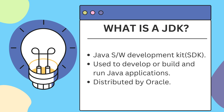JDK is distributed by Oracle. Why Oracle? Because Sun Microsystems was acquired by Oracle in 2010, so now Oracle is responsible for distributing all the tools for developing Java applications.